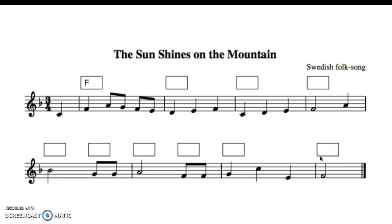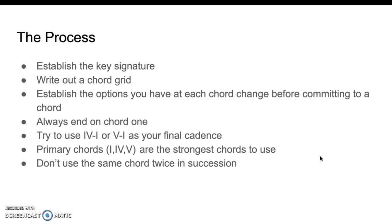Always use chord one at the end. Don't use the same chord twice in a row — in the old junior cert that was a rule you were told not to break. Stick as closely to the primary chords as you can: chord one, chord four, and chord five. Don't use chord three or chord seven.